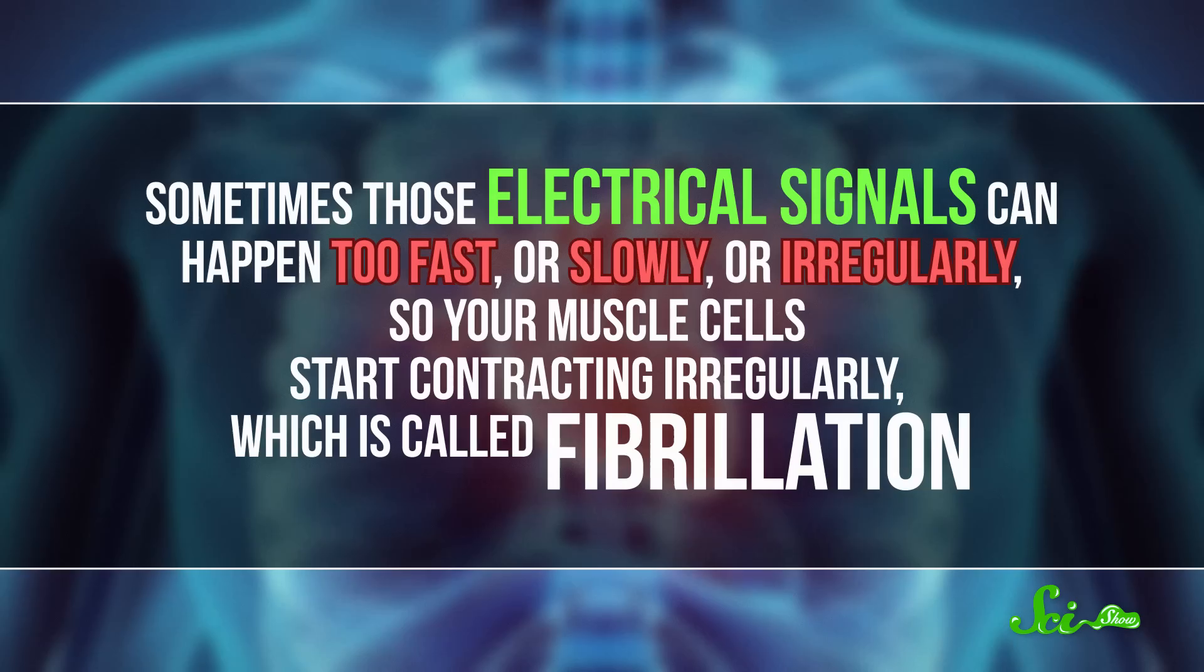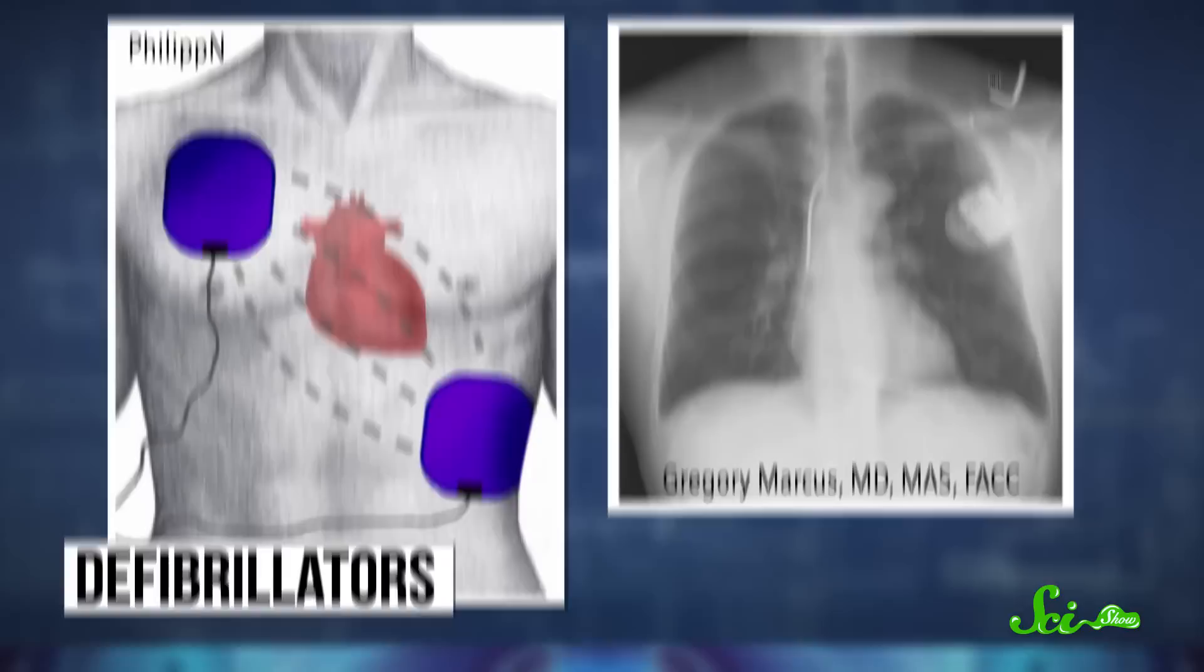Sometimes those electrical signals can happen too fast, or slowly, or irregularly. So your muscle cells start contracting irregularly, which is called fibrillation.